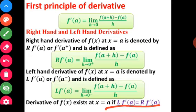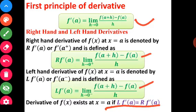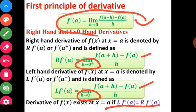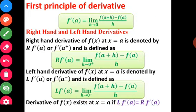This is a very important slide, so please take a screenshot and note it down. This is the first principle of derivative formula learned in 11th standard. The right-hand and left-hand derivative formulas are the same — nothing has changed — only the direction of approach differs: h tending to 0 plus from the right, and h tending to 0 minus from the left.